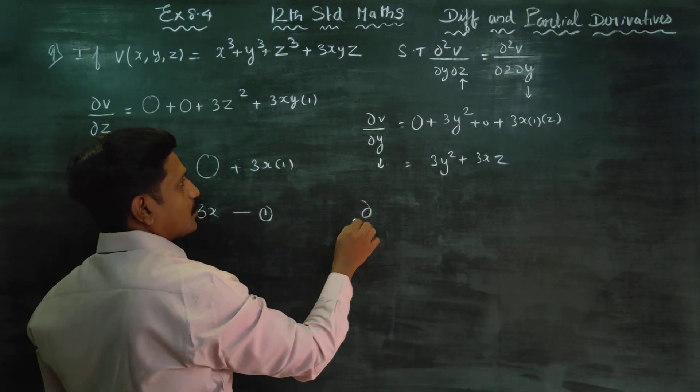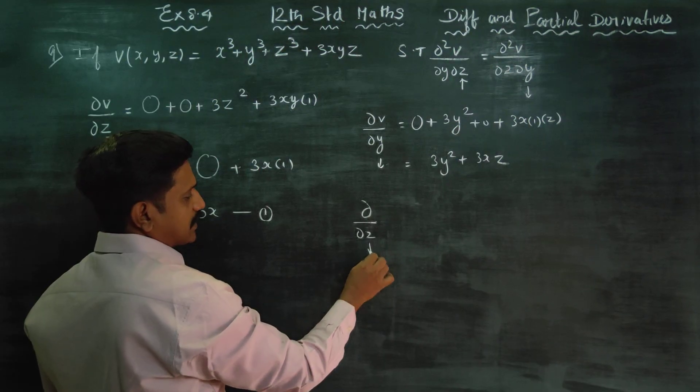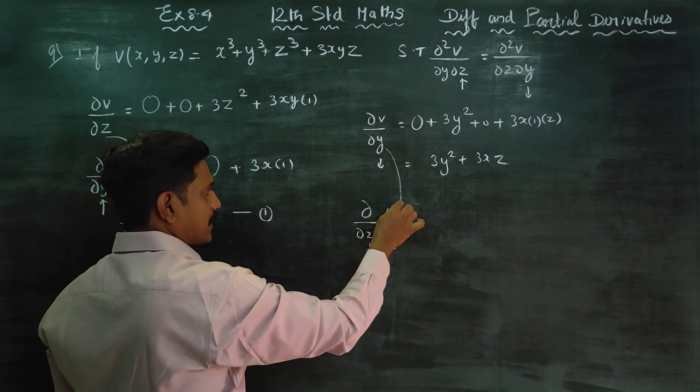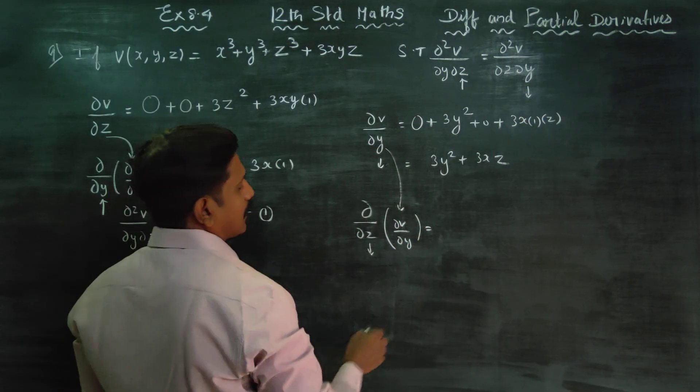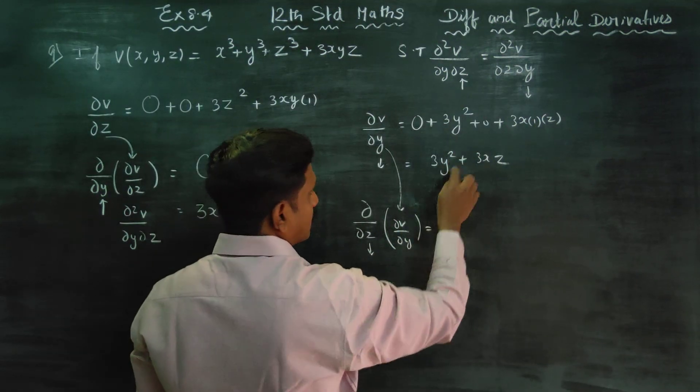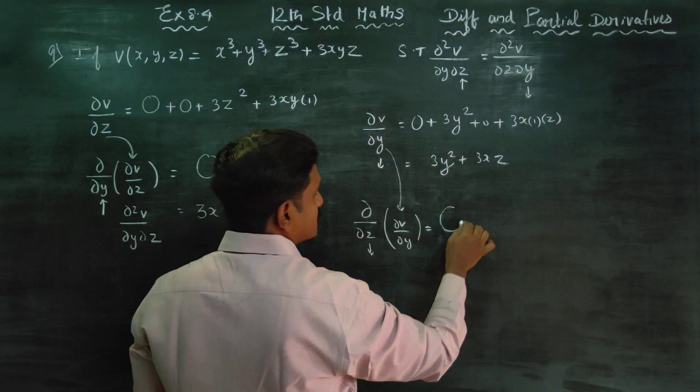After that, the outer derivative: d/dz. That is with respect to z. This sum, dv/dy. So z differentiate, it's constant. y remains. It's constant.